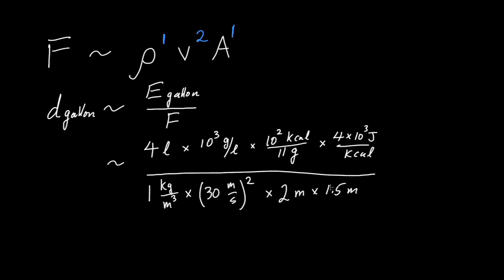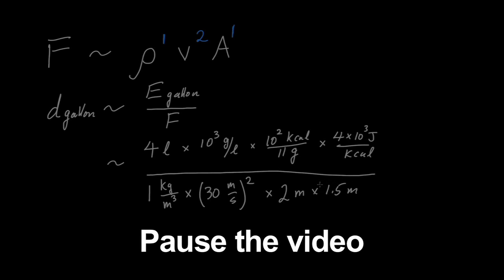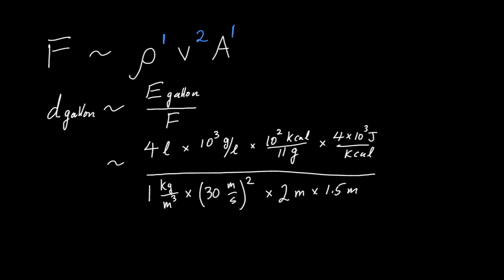Now we have to work out all the numbers. Before you do that, pause the video to check that the dimensions all cancel appropriately. You should have found that the result has units of meters, which is good. But how many? A quick numerical approximation will tell you that you get 50 kilometers, which is 30 miles roughly.